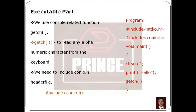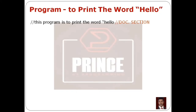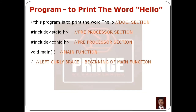If you want to print a different word, you can change the text inside the printf statement. For the documentation section, use a single line comment with double forward slash and the description 'This program is used to print the word hello.' In the preprocessor section, include stdio.h and conio.h. The global declaration section is skipped. Then the void main function with left curly brace, local declaration section, and clear screen function.